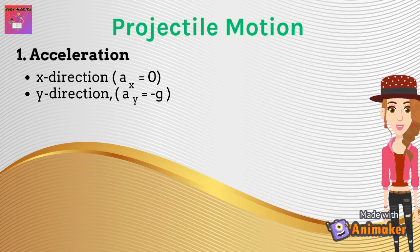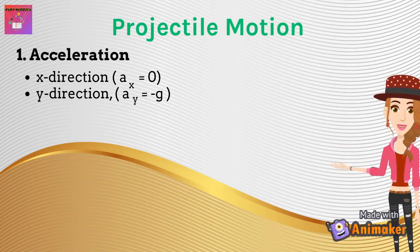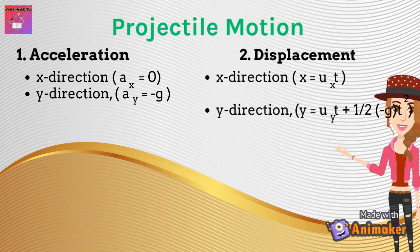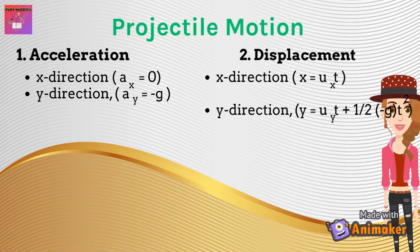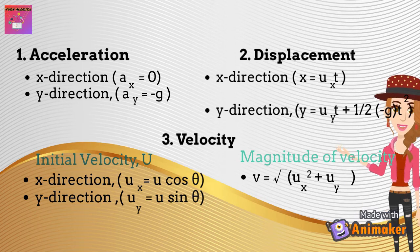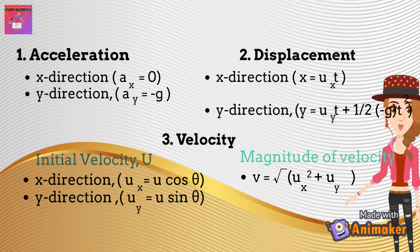Projectile motion also involves displacement, velocity, and acceleration, but magnitudes differ in the x and y axes. For acceleration: x-component is 0, y-component equals negative g. For displacement: in the x direction, x equals ut (since acceleration is 0, we omit the one-half at² term); in the y direction, y equals ut plus one-half at², where a equals negative g. For velocity: the x-component is ux equals u cosθ, and the y-component is uy equals u sinθ. The magnitude of velocity is v equals the square root of ux² plus uy².